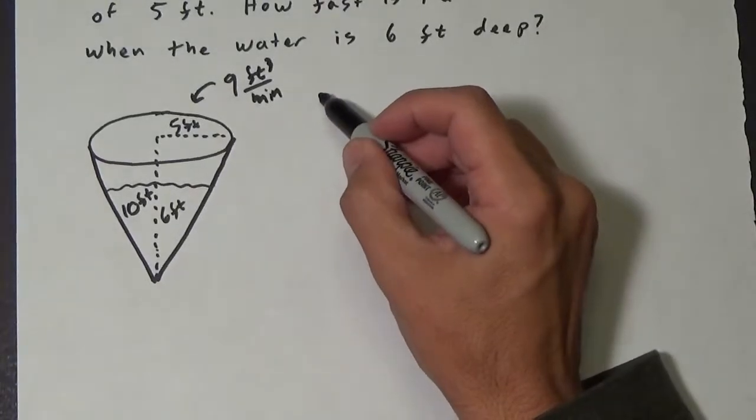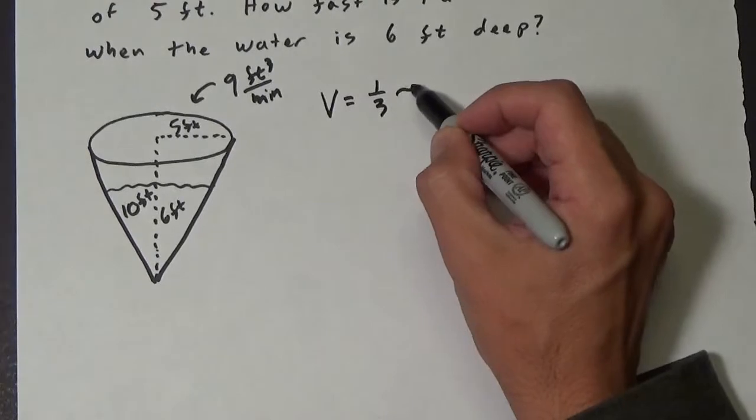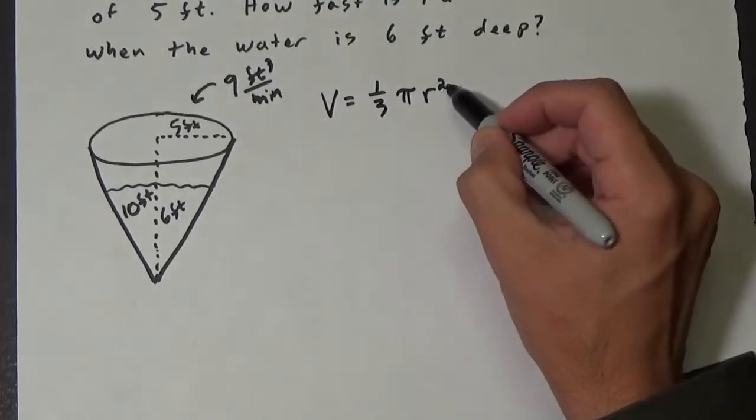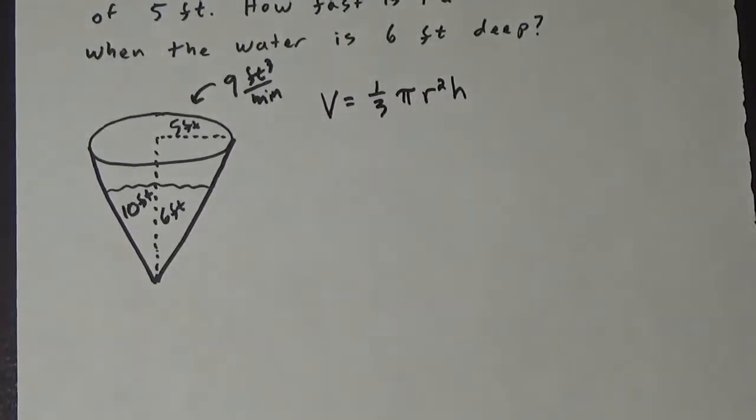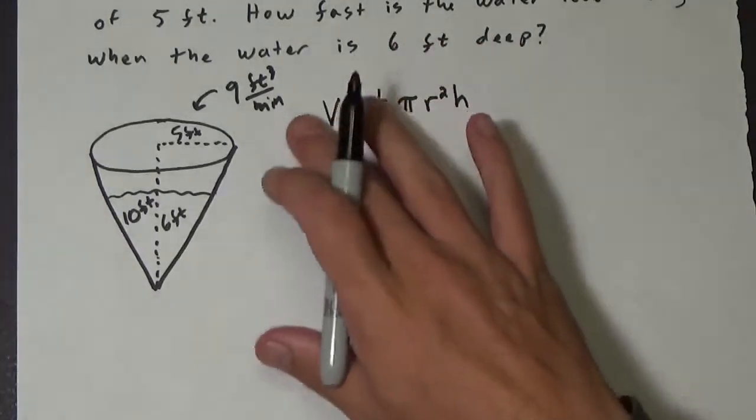So what's the volume of a cone? Well, volume of a cone is 1 third pi r squared h. So that's something you'll remember from geometry. Okay, so now that we have this information here, we're going to take the derivative with respect to time.